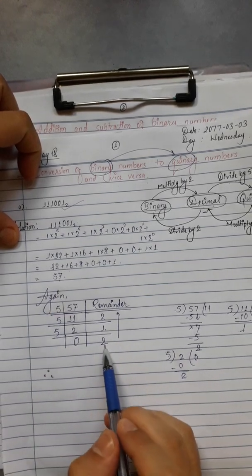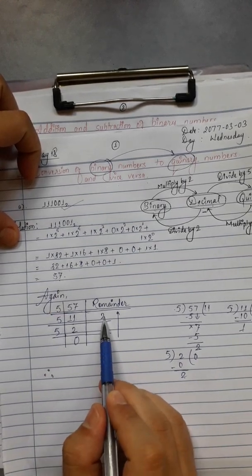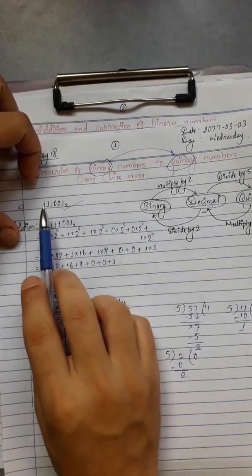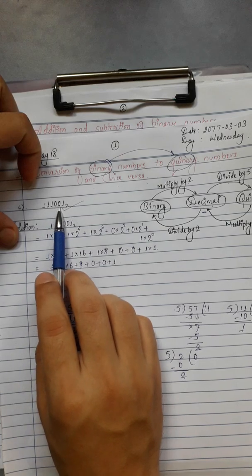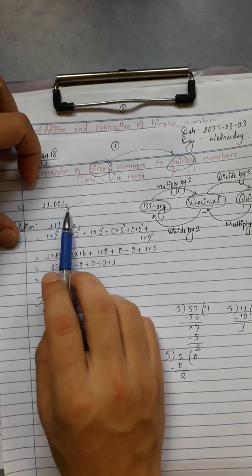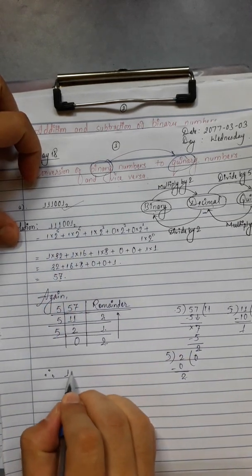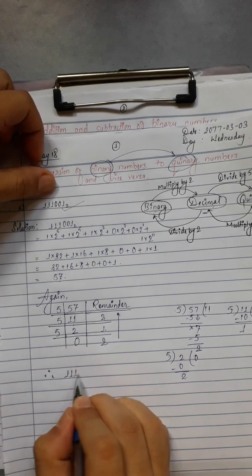So decimal 57 in quinary: reading the remainders upward — the result is 212 in base 5. Now to verify, we also convert back. The binary number 111001 corresponds to quinary 212.